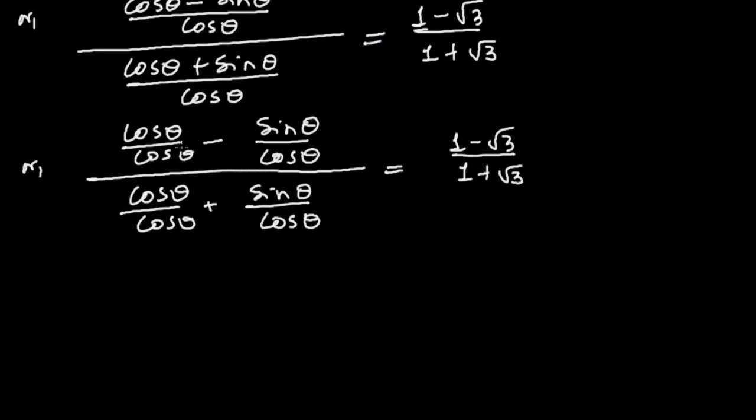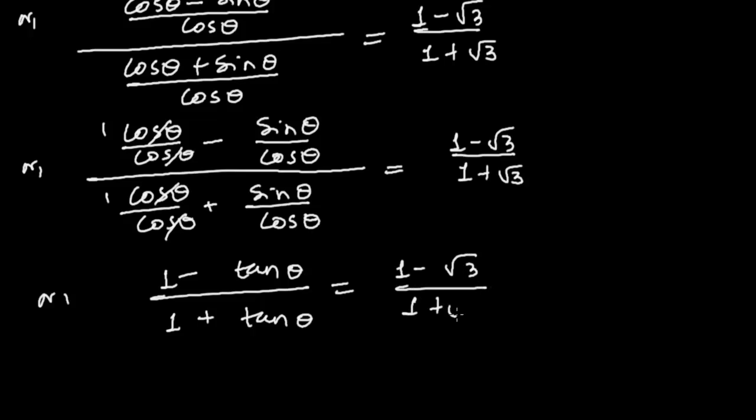So now see this will cancel to 1. Again here cos θ and cos θ will cancel. So now I can write: (1 - tan θ)/(1 + tan θ) = (1 - √3)/(1 + √3), because we know that tan θ equals sin θ/cos θ.